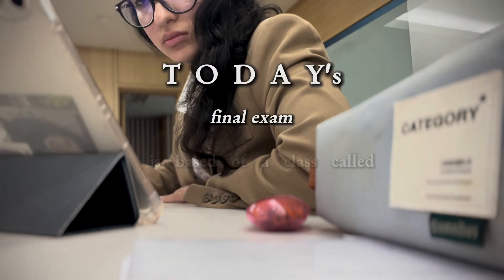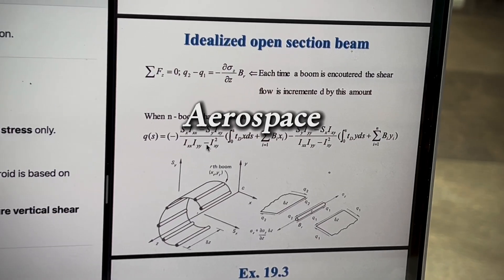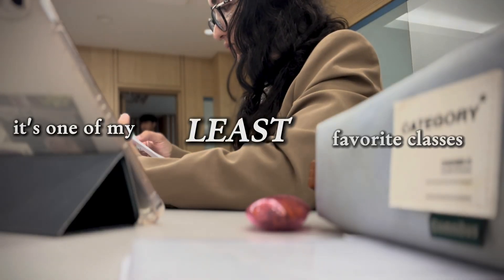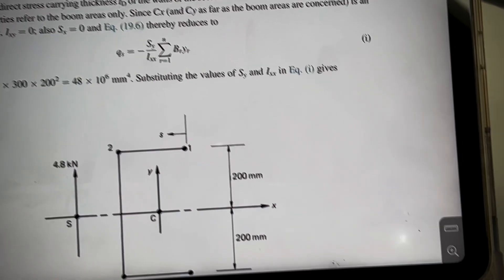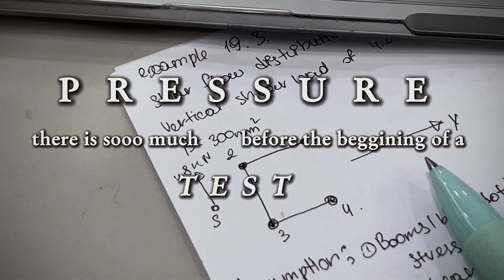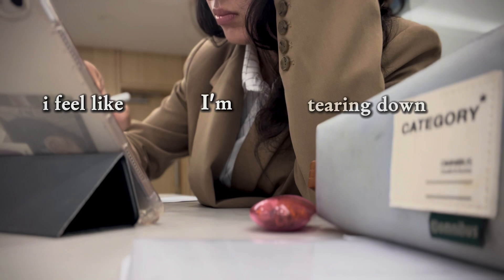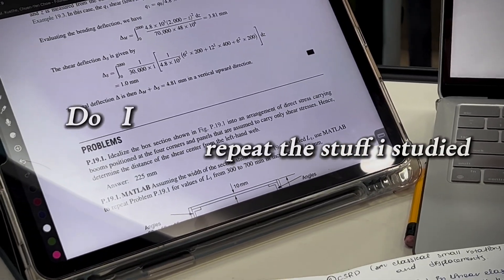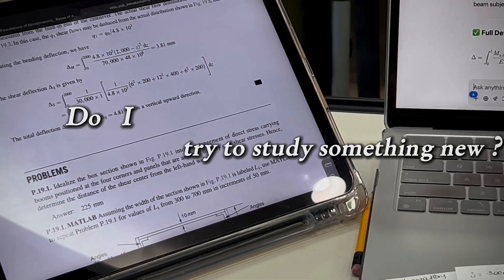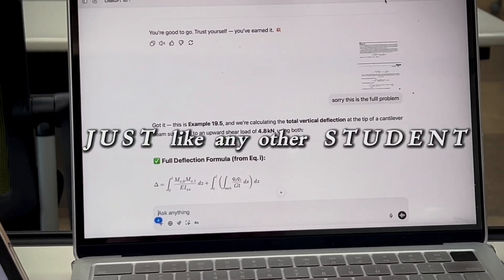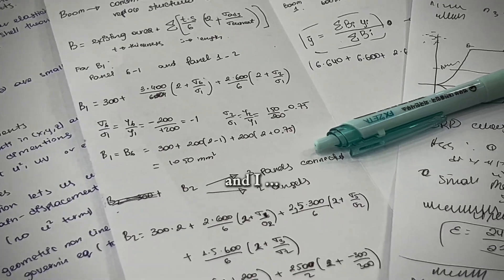Today's final exam is based on a class called aerospace structures. It's one of my least favorite classes I've taken so far. There's so much pressure before the beginning of a test. I feel like I'm tearing into pieces because I have no idea. Do I repeat the stuff I studied? Do I try to study something new? Just like any other student, I have no idea what to do. I feel so scared.